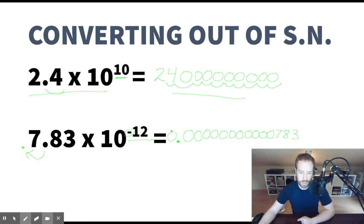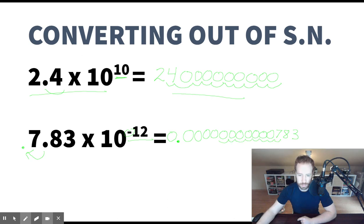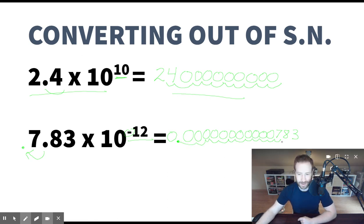We can write an extra placeholder zero at the front if we want. Just to double check — did we move the decimal 12 places? One, two, three, four, five, six, seven, eight, nine, ten, eleven, twelve. We did it.